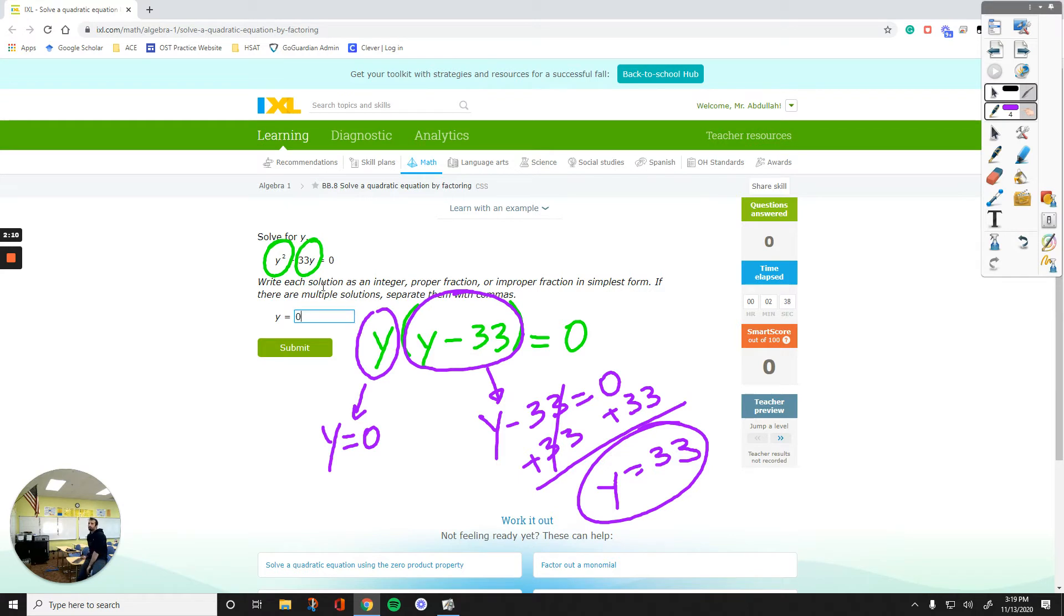It says write your solutions as an integer - integers are like negative 10, zero, 11, 7, all of those numbers, positives or negatives. Proper fraction, improper fraction, in simplest form. If there are multiple solutions, which there are right now, separate them with commas. Zero and 33, let's submit it.